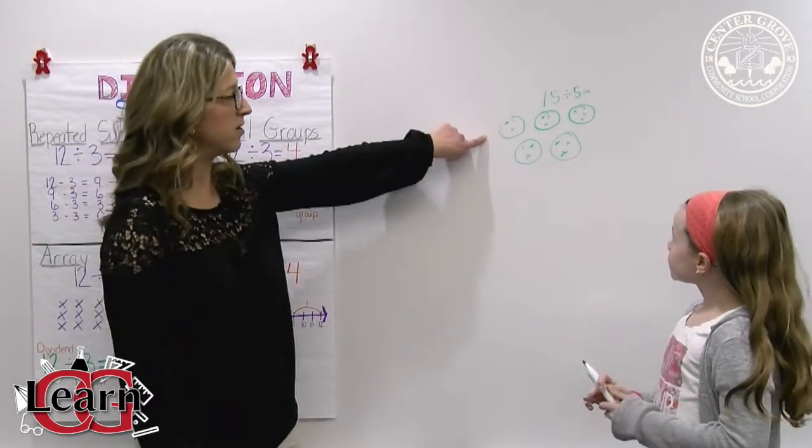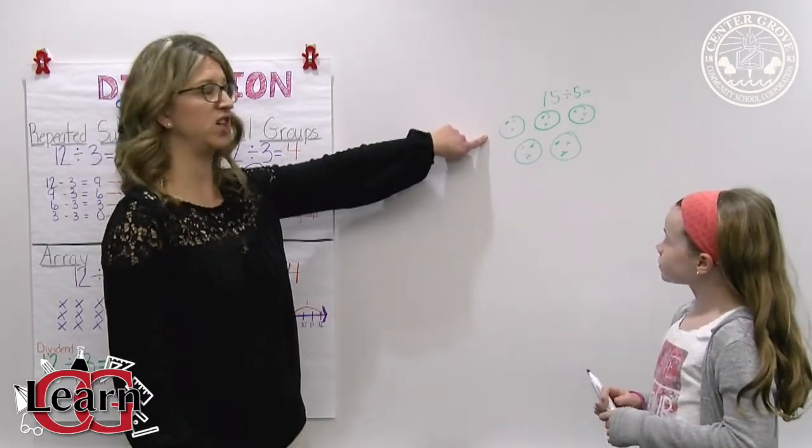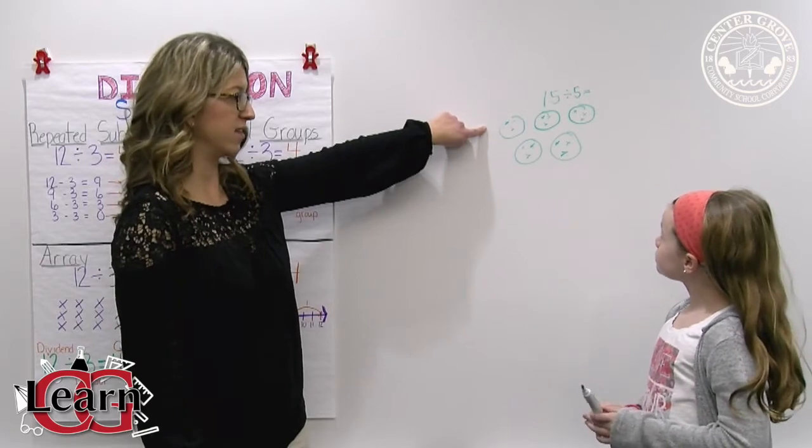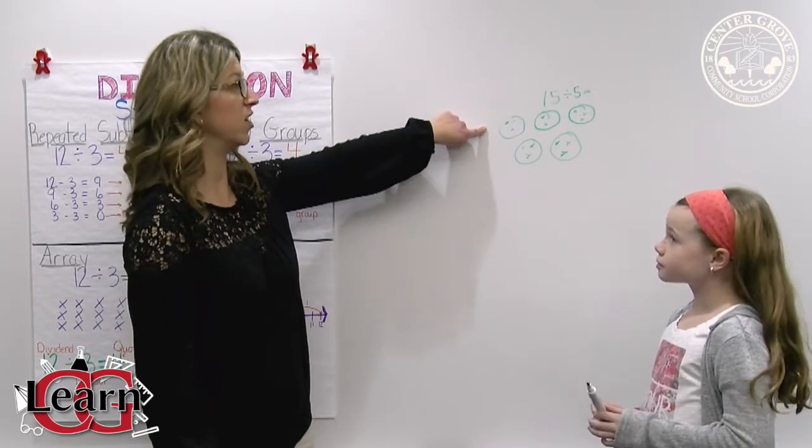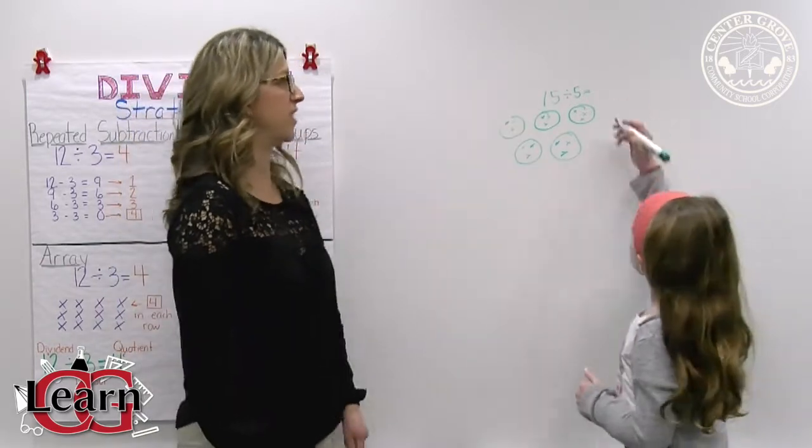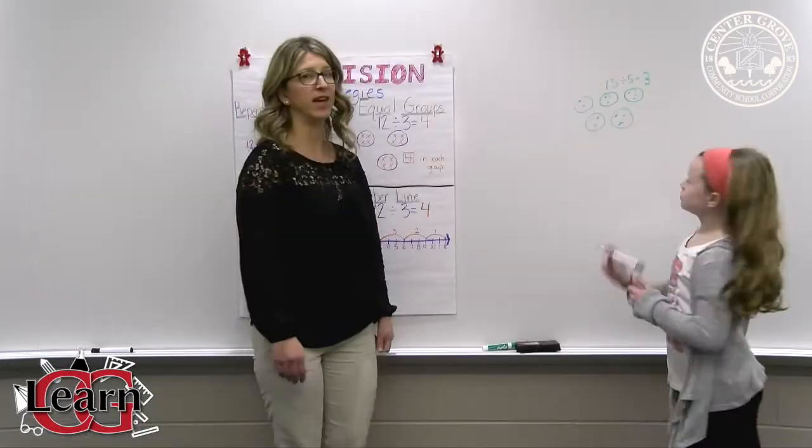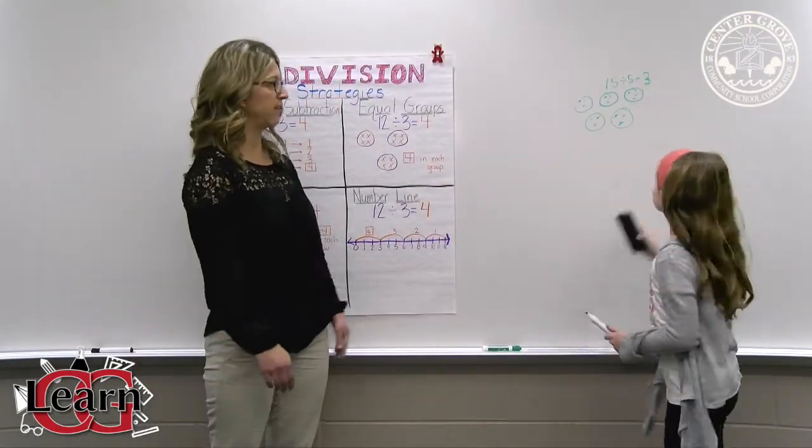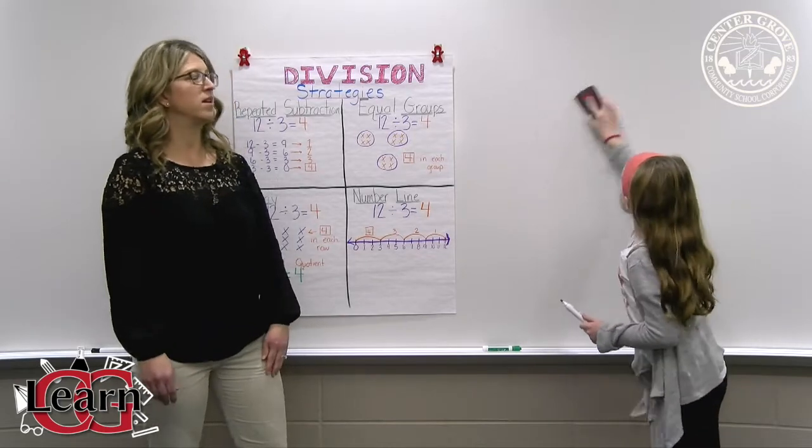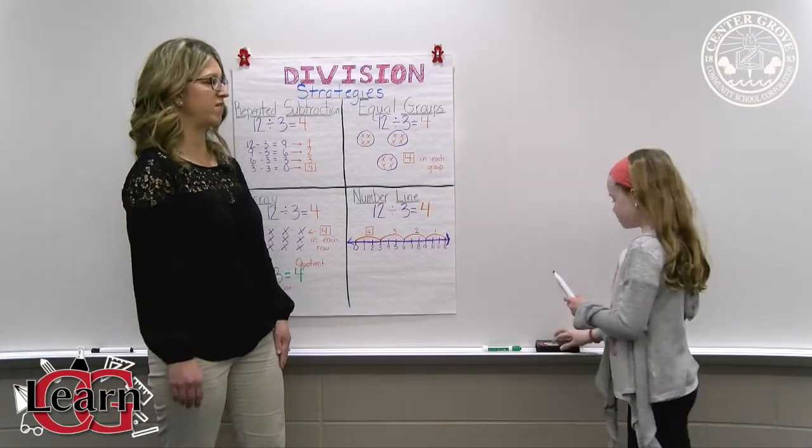And now she's going to look at one circle and she is going to see that she has three in that circle. So she will know that her answer is three. So 15 divided by 5 is 3. Okay, so that was equal groups. I'm going to have her erase and we're going to do the same division problem, 15 divided by 5.